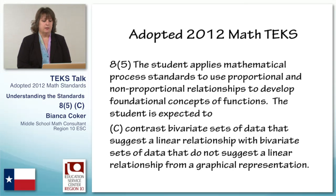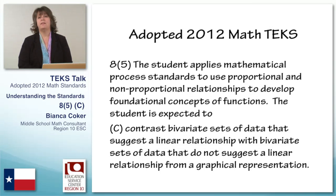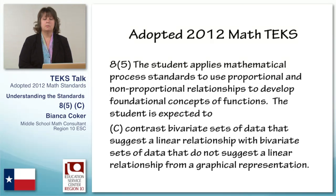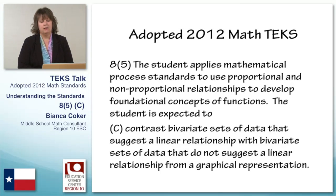One of the new math standards from the adopted 2012 standards is 8.5. The student applies mathematical process standards to use proportional and non-proportional relationships to develop foundational concepts of functions. The student is expected to contrast bivariate sets of data that suggest a linear relationship with bivariate sets of data that do not suggest a linear relationship from a graphical representation.